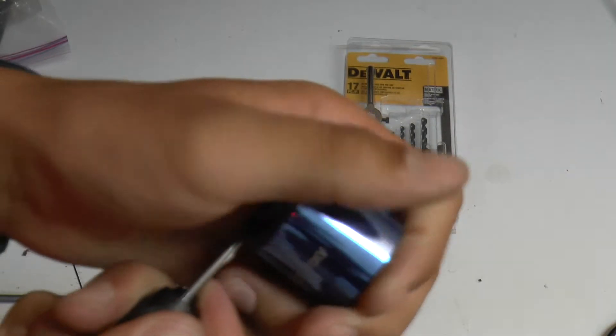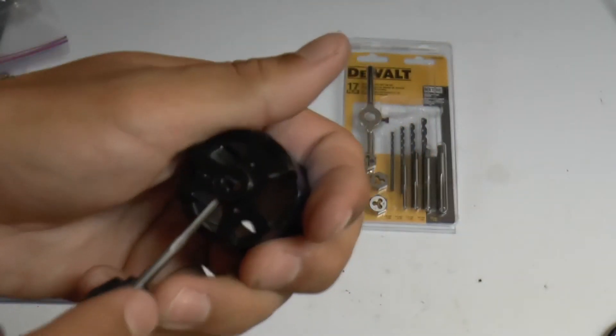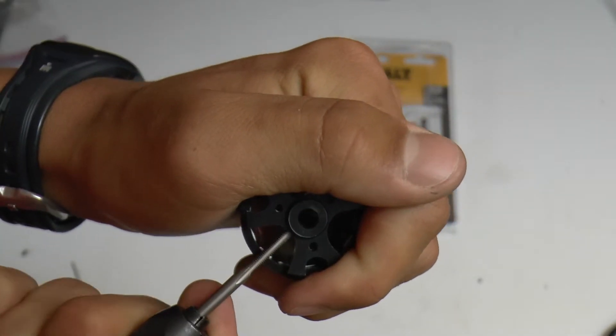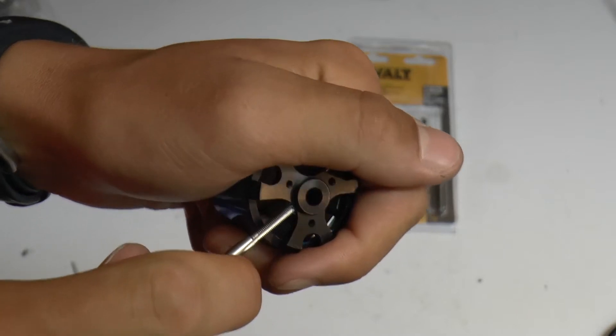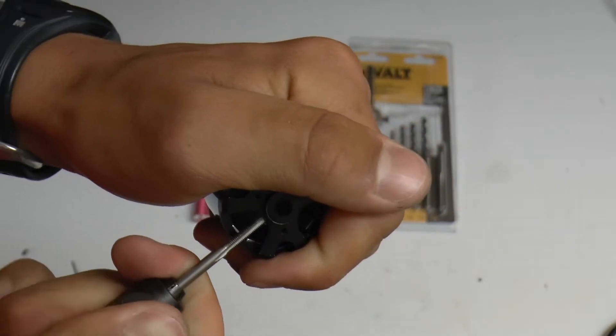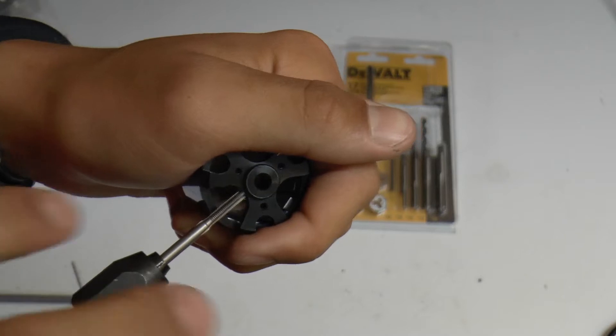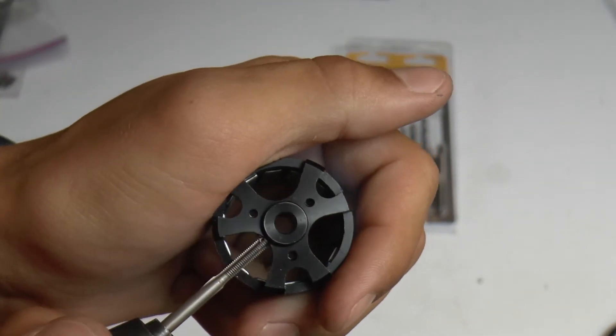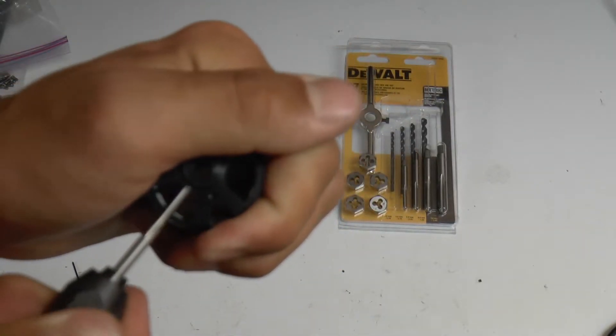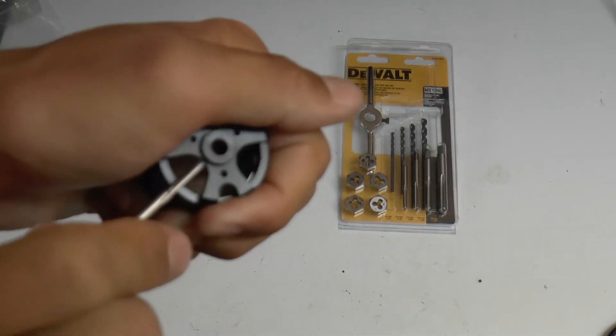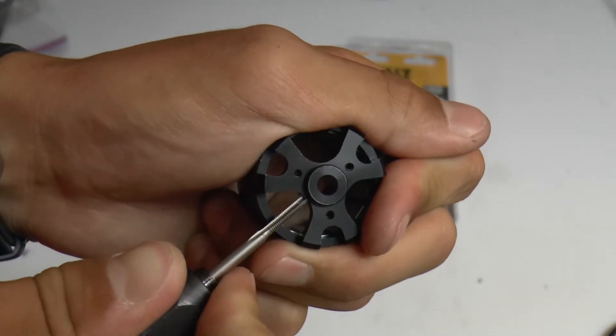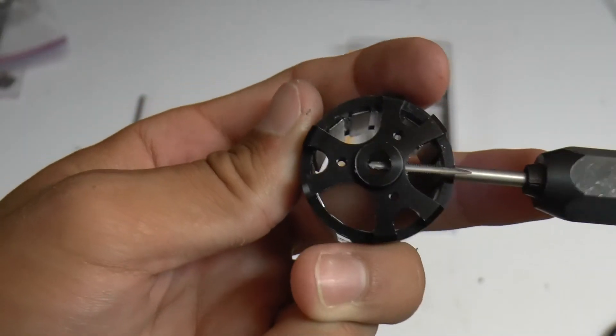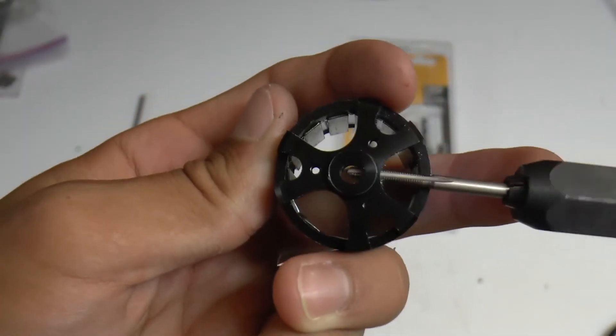Just make sure that you are, one, applying a lot of force, and two, just being very careful not to allow any problems with the thread. Once it's starting to appear on the other side, you can start to lessen the force and just let the threads do their thing. Once you have made it all the way through, slowly remove it.